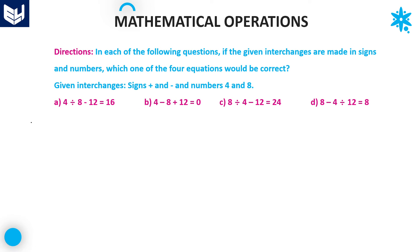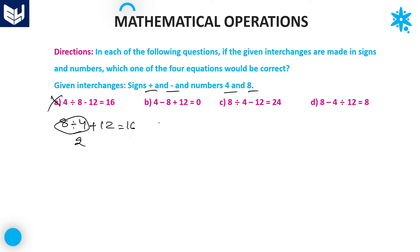For the next question, we need to interchange plus and minus, and the numbers four and eight. After interchanges, checking option A: minus eight divided by four minus eight divided by four equals two, and two plus twelve equals fourteen — which is wrong. For option B: eight becomes four, minus becomes plus, giving twelve minus twelve equals zero — this is satisfied, therefore option B is the right answer.